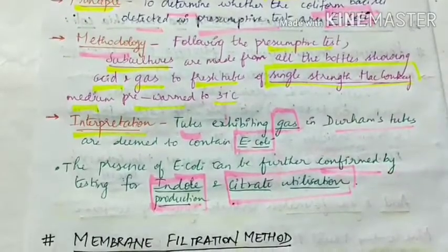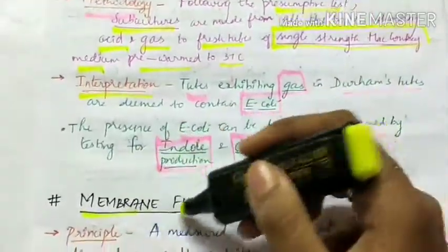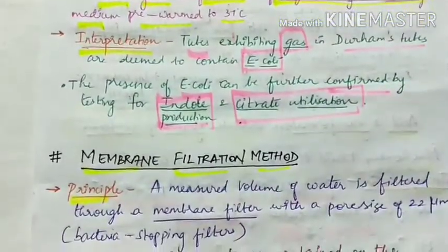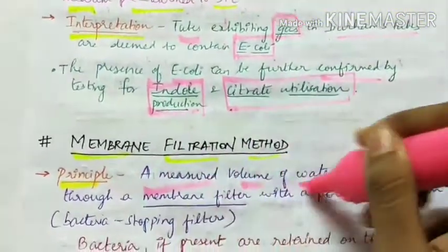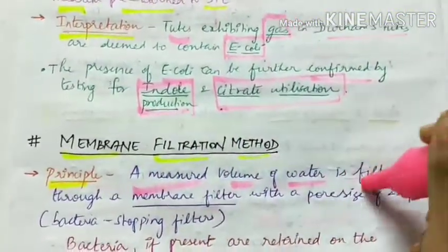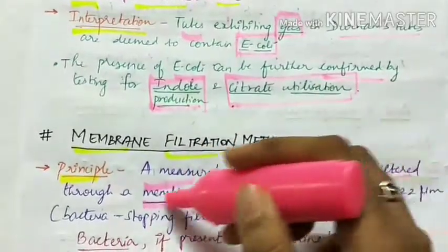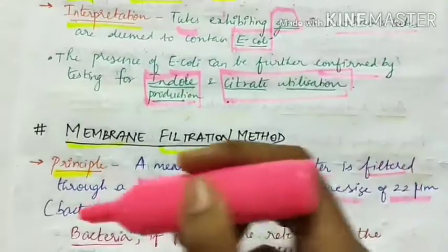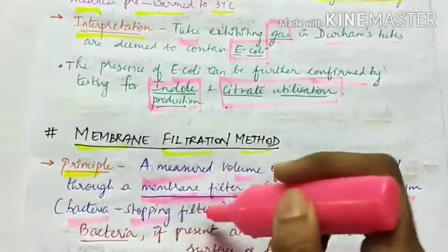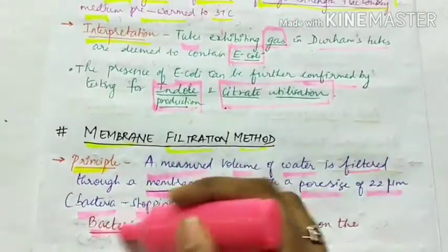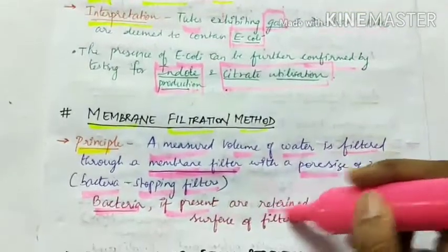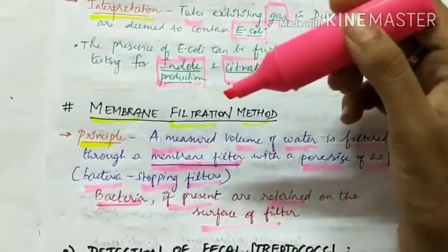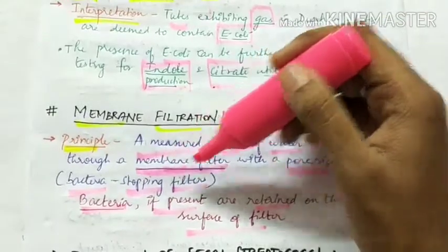The next method is membrane filtration. A measured volume of water is filtered through a membrane filter with a pore size of 0.22 micrometers — a bacteria-stopping filter — so any bacteria present are retained on the filter surface.